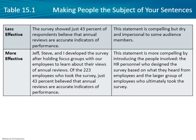Here are examples of making people the subject of sentences. The less effective version: 'The survey showed just 43% of respondents believe that annual reviews are accurate indicators of performance.' That's dry and doesn't resonate. The more effective version: 'Jeff, Steve, and I developed a survey after holding focus groups with our...' — the key difference is introducing the people involved. We're not just talking about data; we're including the characters in the story. Show their names, let people see who they are — that adds to the message.